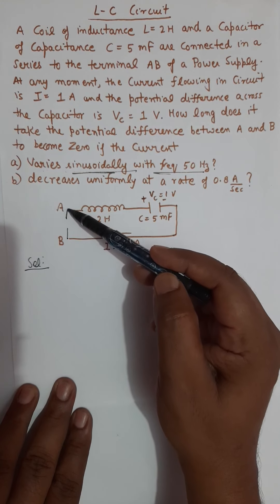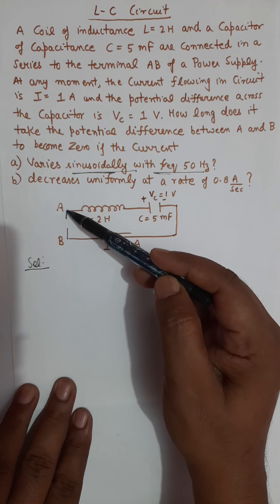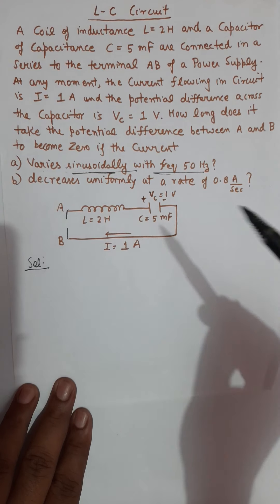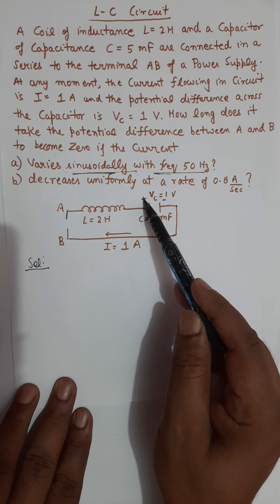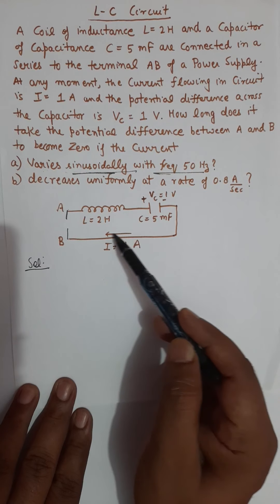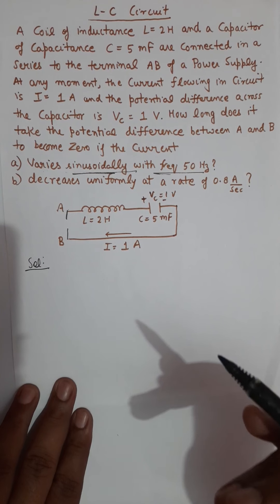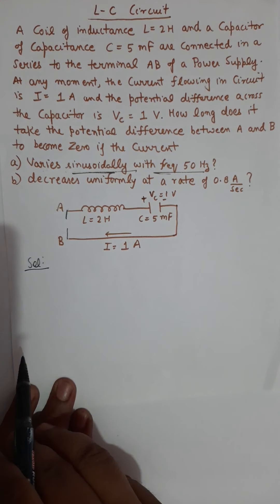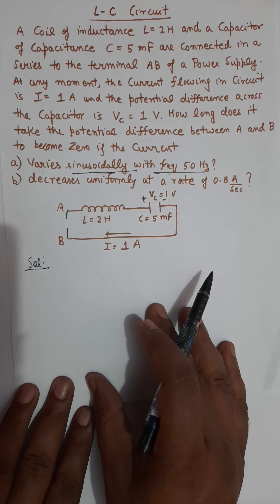That means here we have some alternating voltage connected, and because of that alternating voltage, at any specific moment, the potential difference across the capacitor is given to be 1 volt and current in the circuit is 1 ampere. They are asking at what time the potential difference between A and B is going to be 0.